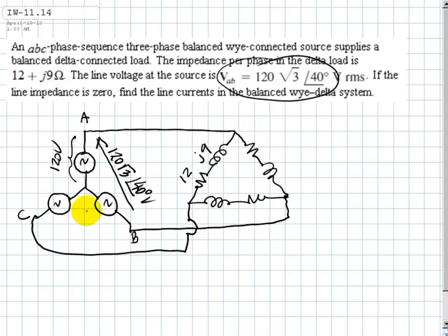Let me redraw this as a phasor diagram. This is phase A neutral, this is phase B, and this is phase C. This is the voltage they are giving me, which is root 3 times 120.